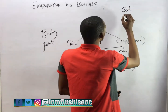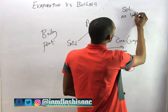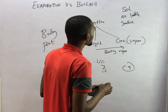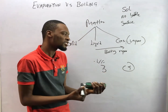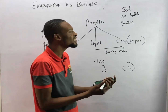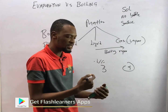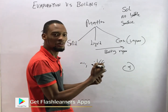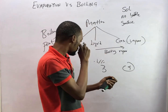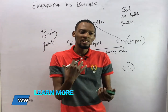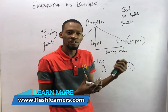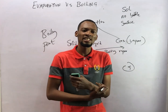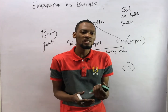Evaporation is slow and no bubble is formed. Evaporation is a slow process — it occurs slowly. But boiling takes place rapidly; the liquid begins to boil and begins to form bubbles. So boiling leads to the formation of bubbles, but in evaporation no bubble is formed. Also, the larger the surface area, the more evaporation can take place, but surface area does not affect boiling.